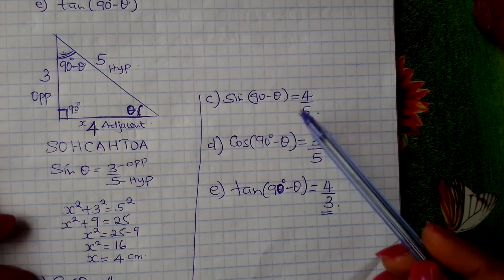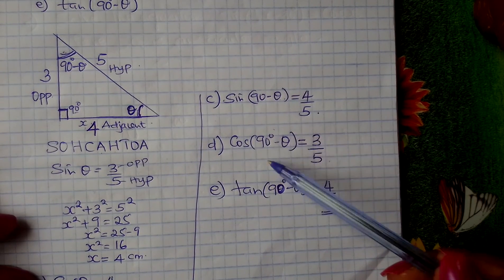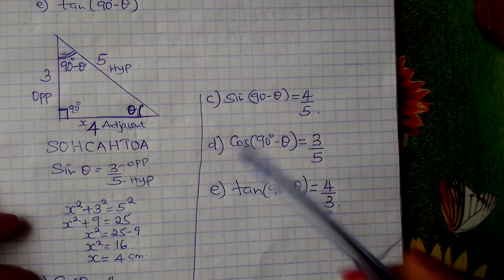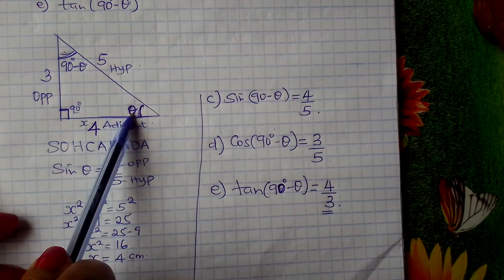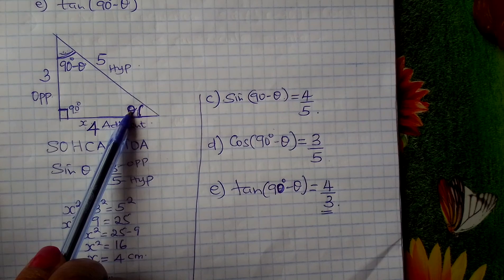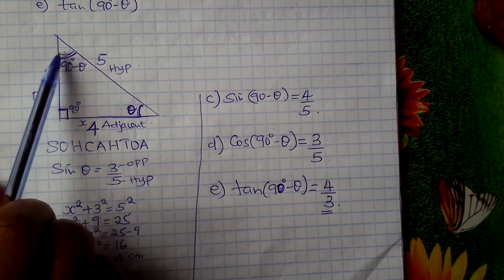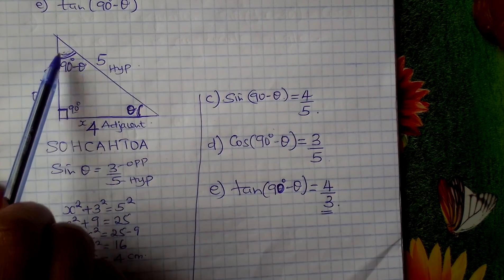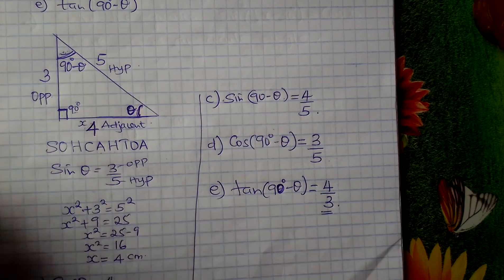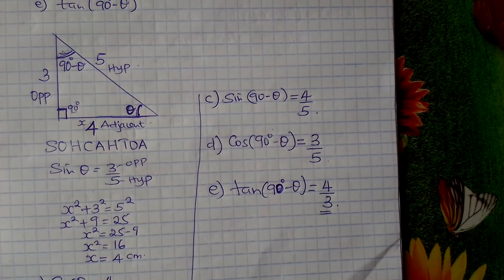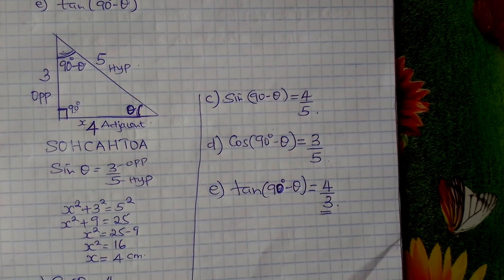So, learner, go and practice on such problems to do the trigonometry. Remember, these two acute angles in a right angle triangle add up to 90 degrees. You have to be able to fix this angle here, which is 90 minus theta degrees. All the best, learners.